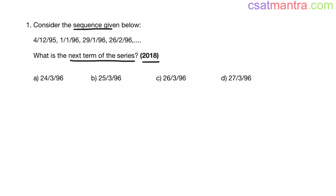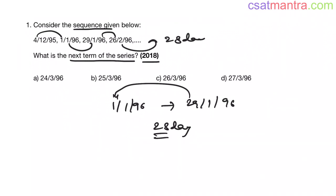If you observe from 1/1/96 to 29/1/96, there are 28 days in between. 29 minus 1 is equal to 28. So to find the next term, we have to add 28 days my friends.